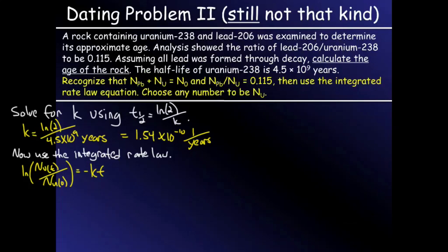So this becomes important. This allows me to modify this equation so that the number of radioactive nuclides initially of uranium is going to be equal to the number that I have now of uranium plus the lead that was formed.